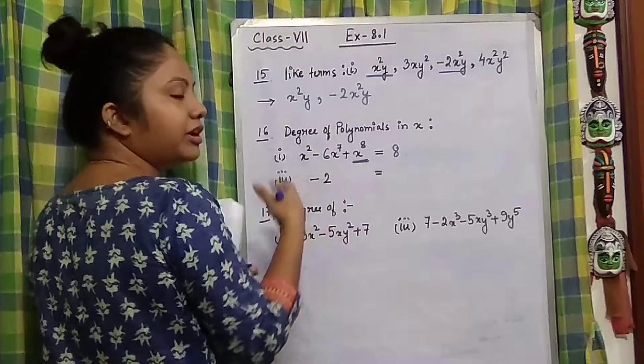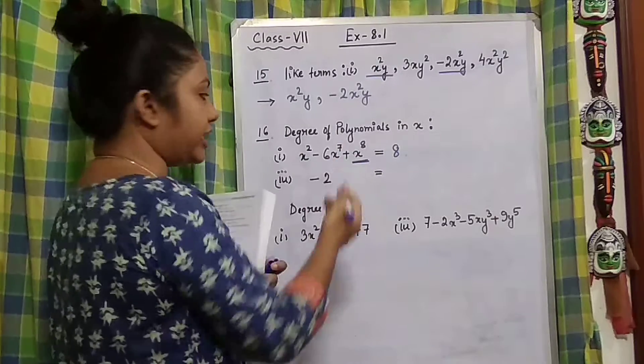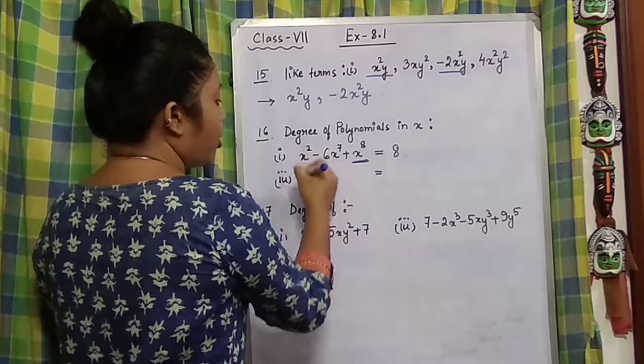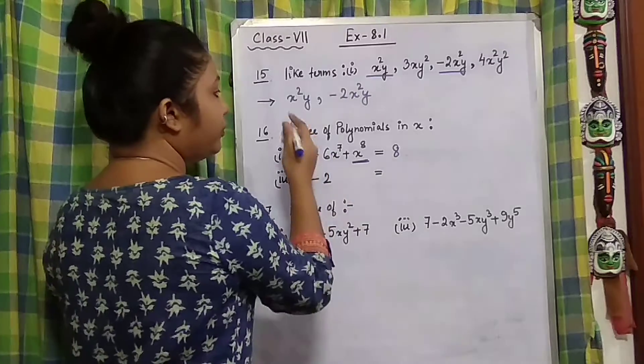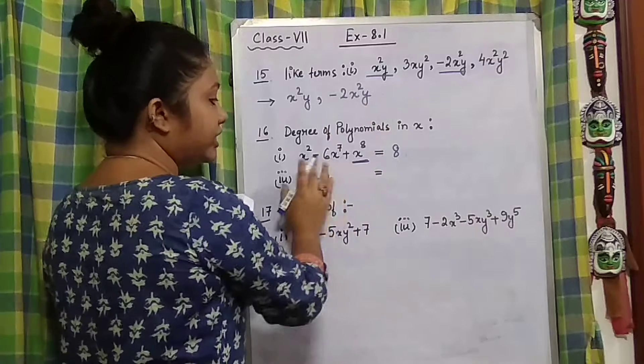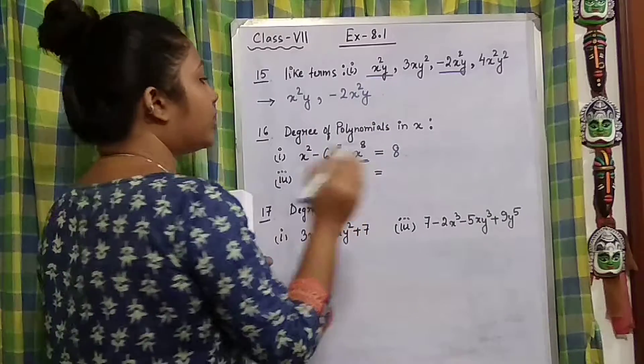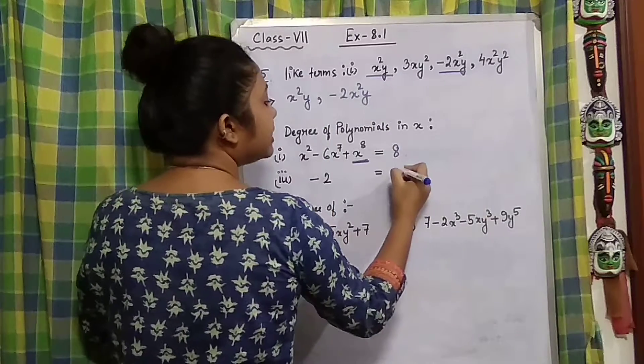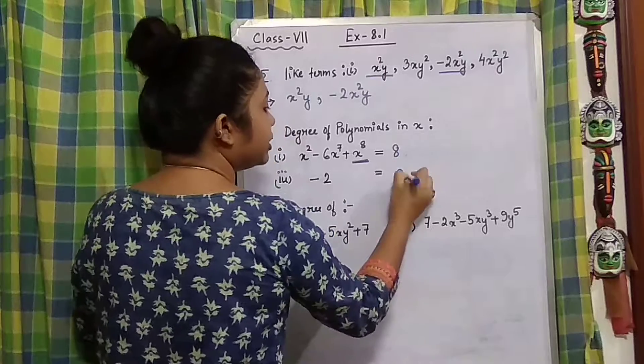Now coming to number 3. This can be a bit confusing. Look at this - only -2 is given. You have to find the degree of polynomial in x, but there is no x here. So what will the degree be? That will be exactly right - it will be 0.